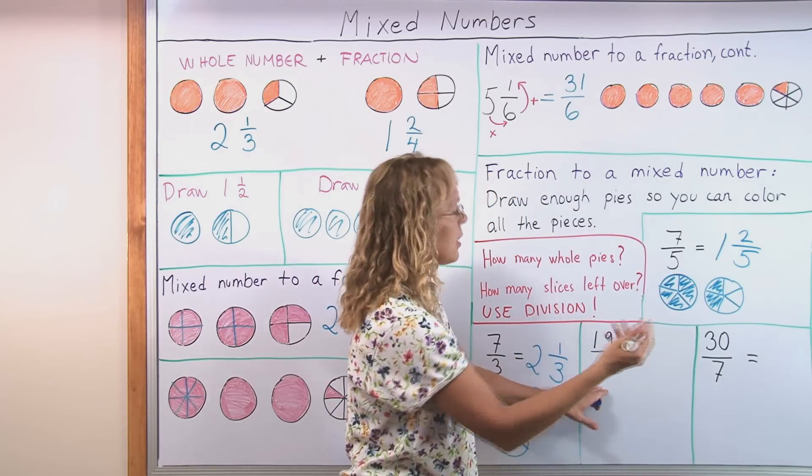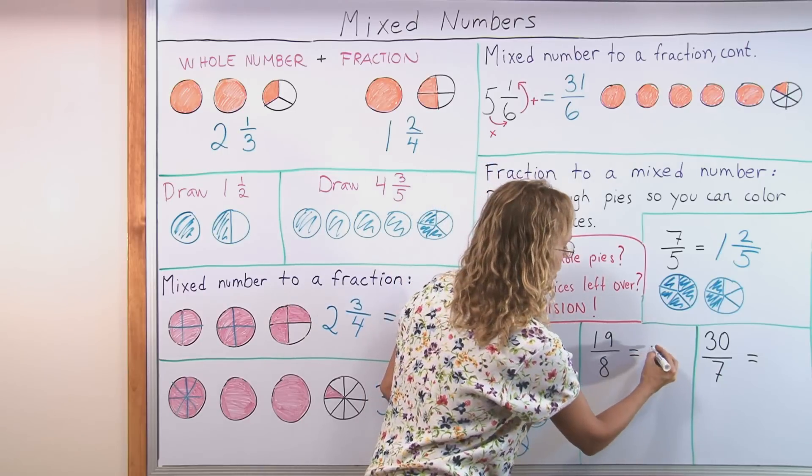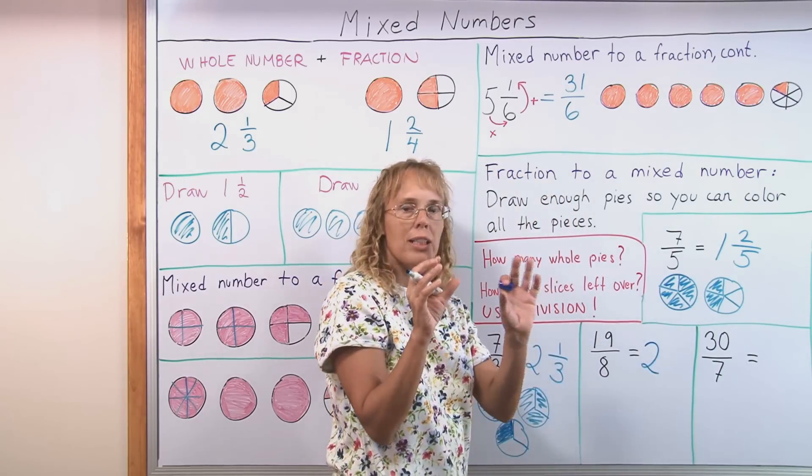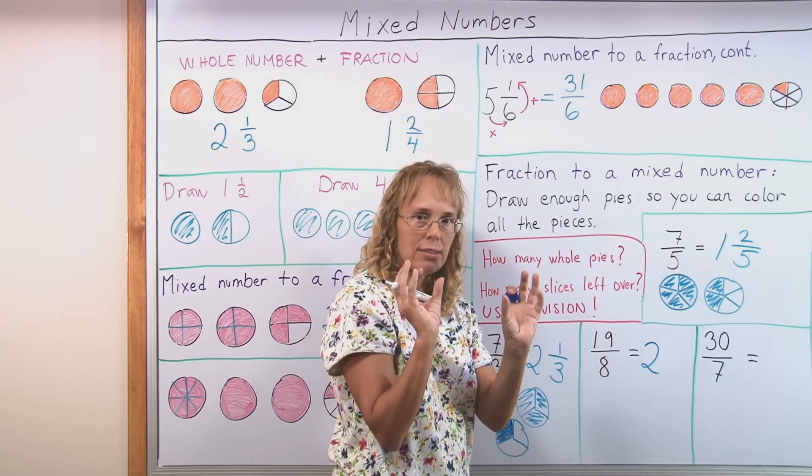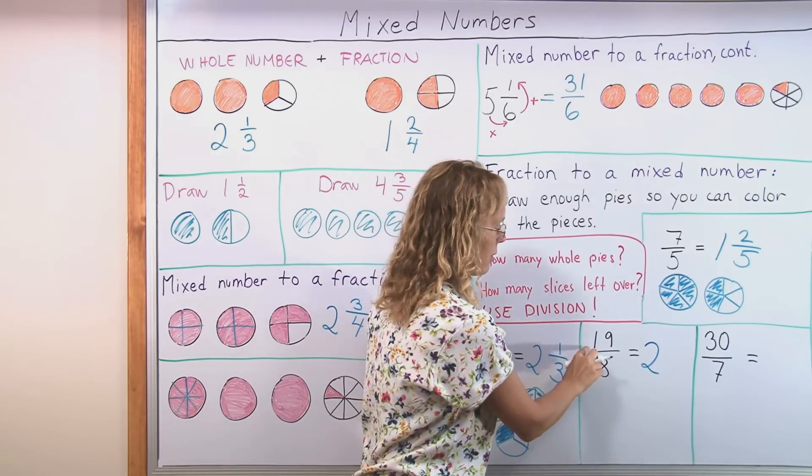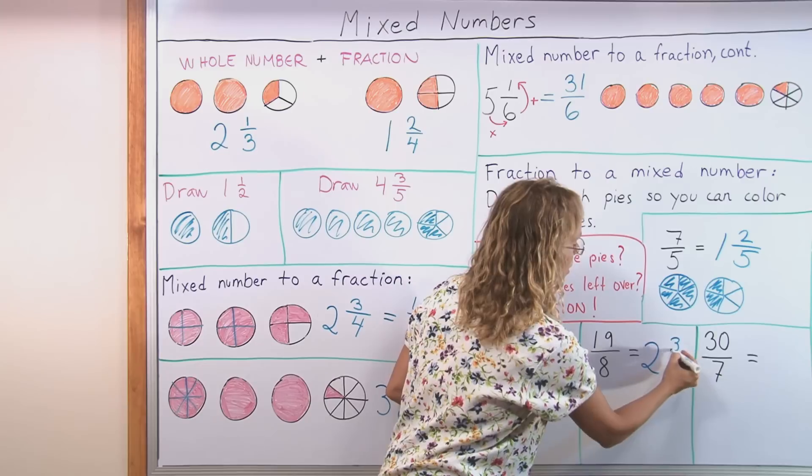8 and 16. It goes two times. So I will get two whole pies. And those two whole pies will have the 16 slices. And then I will have three slices left over. Three eighths.